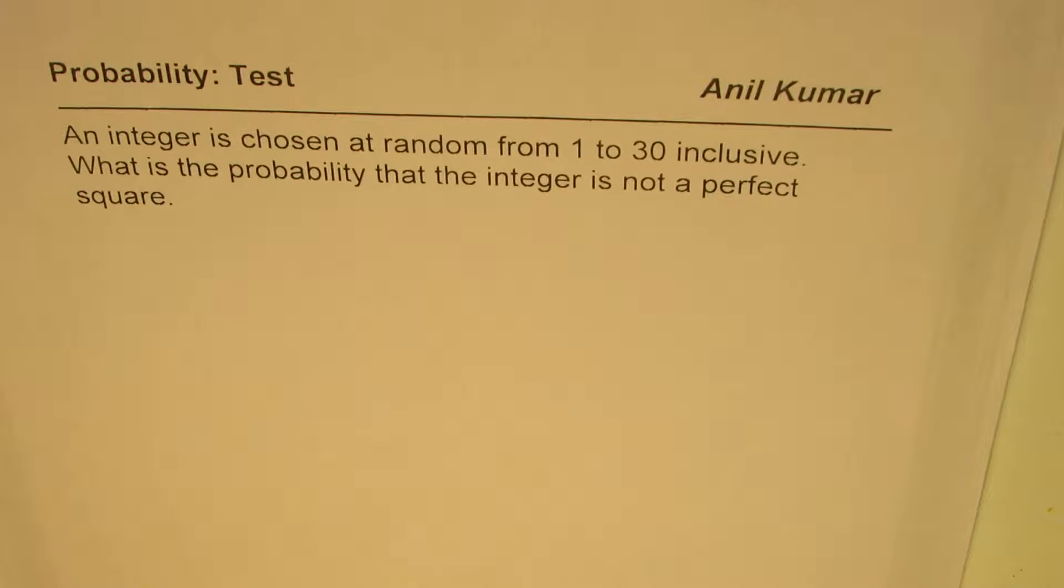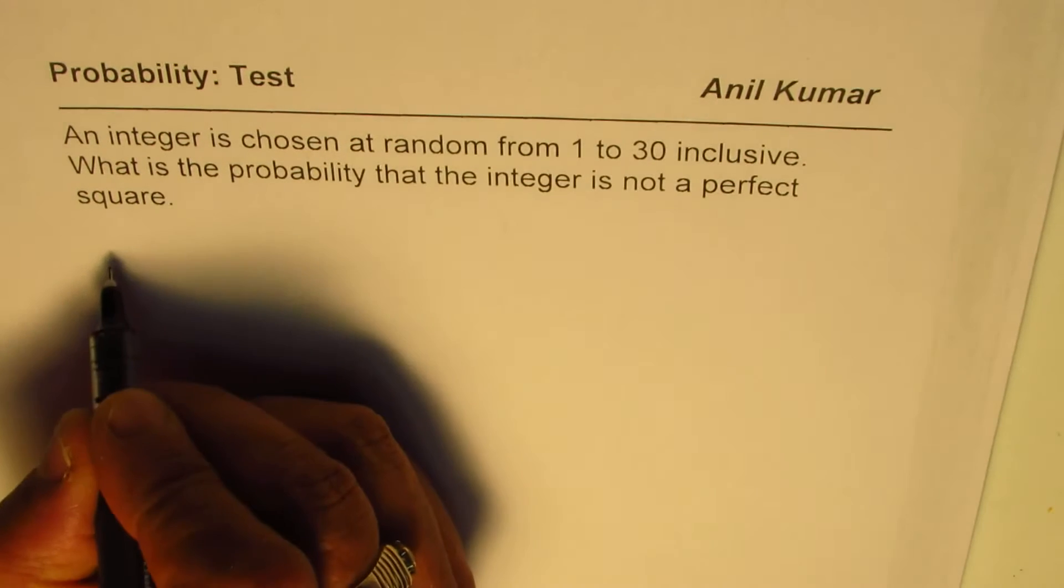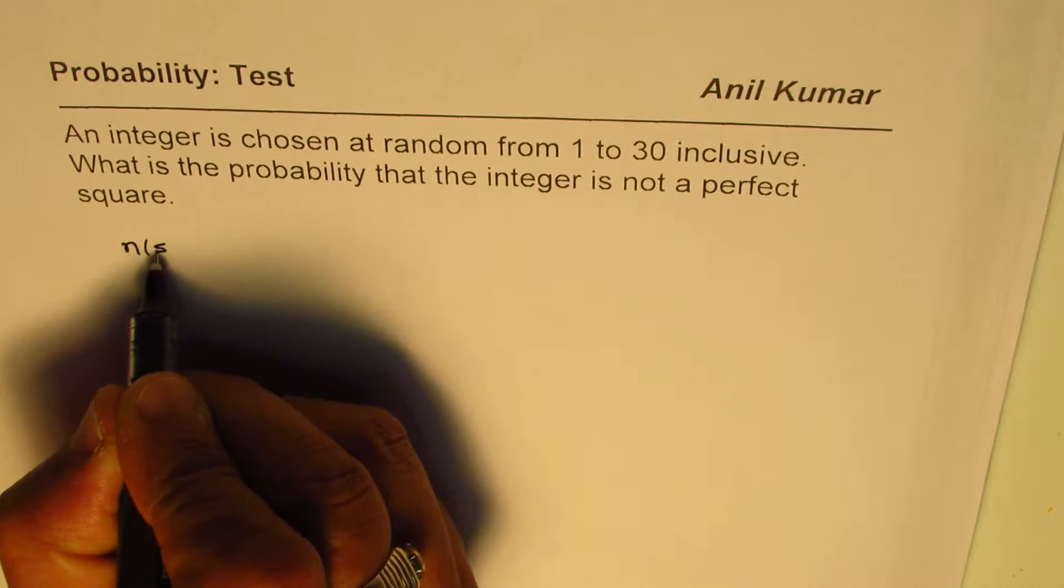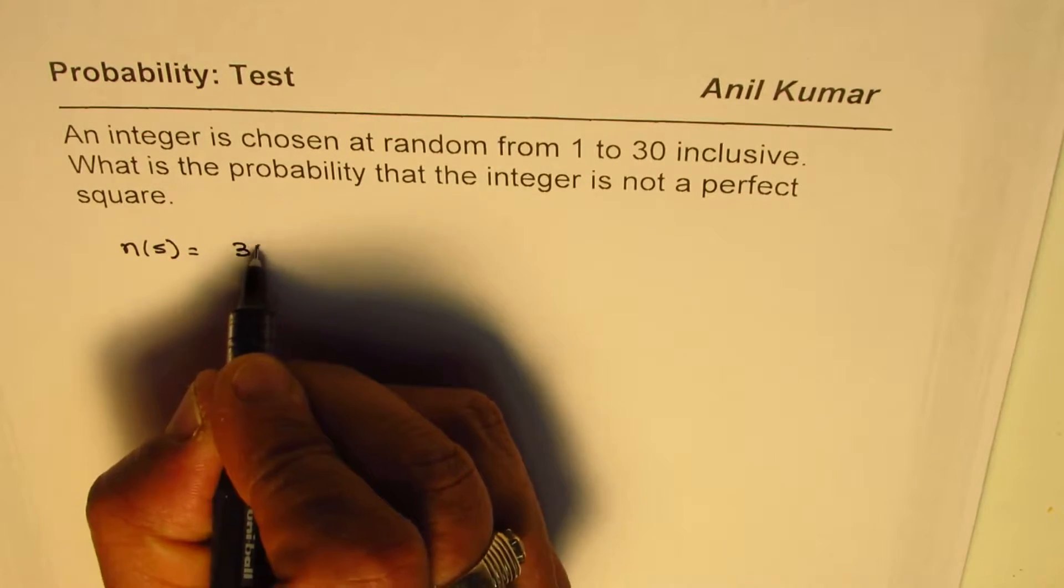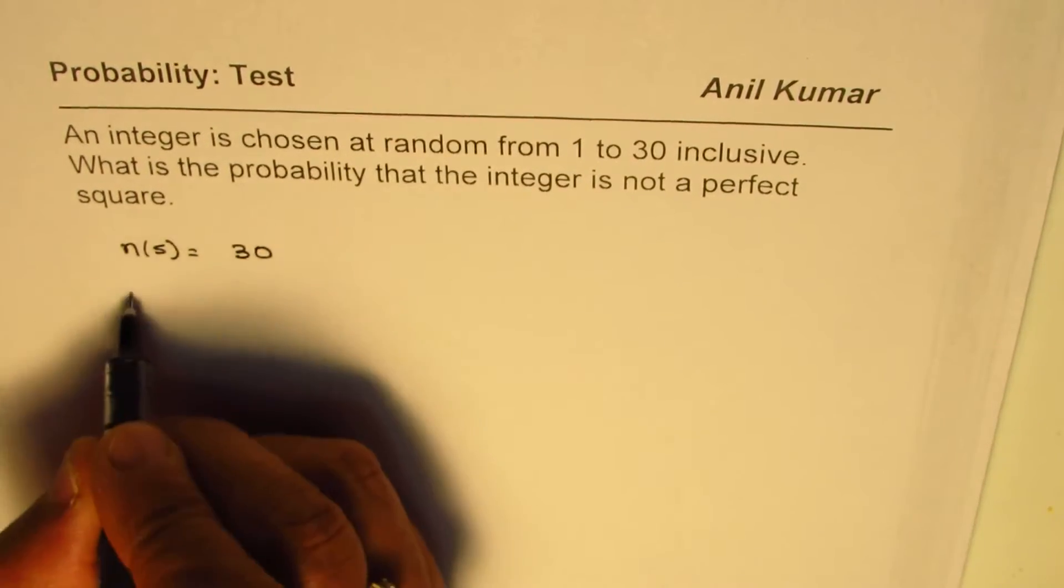What is the probability that the integer is not a perfect square? So here in a sample space, how many elements are there? Numbers from 1 to 30 makes it 30. Now we need to find how many numbers are perfect squares within this.